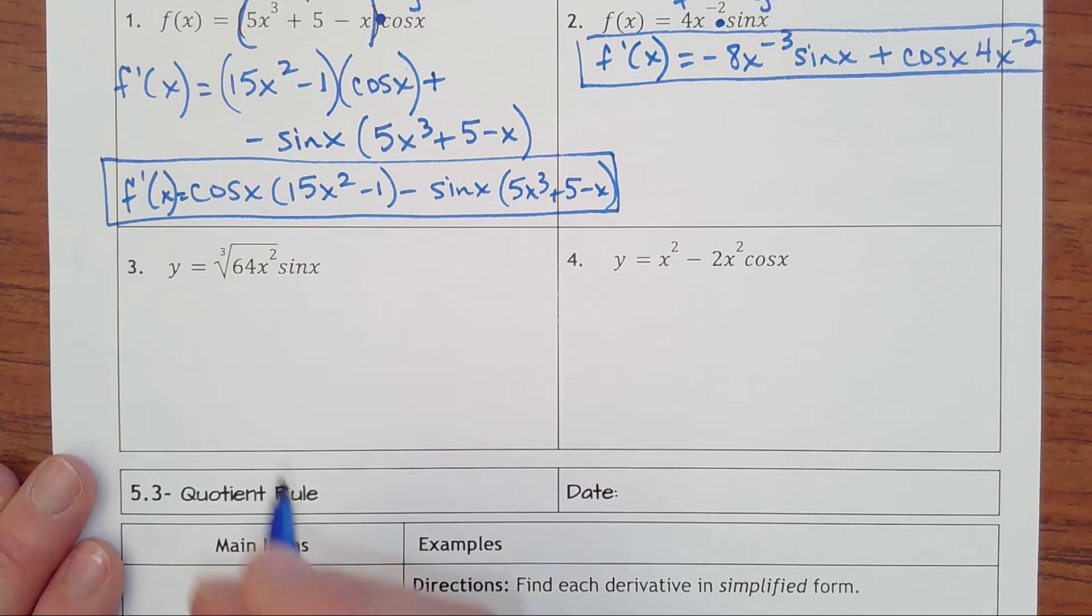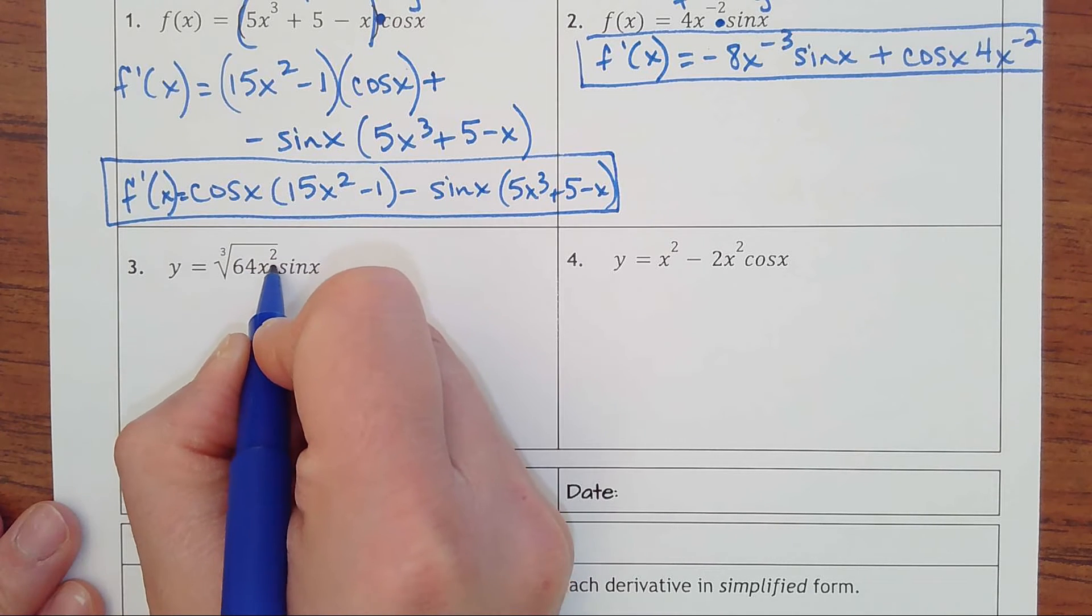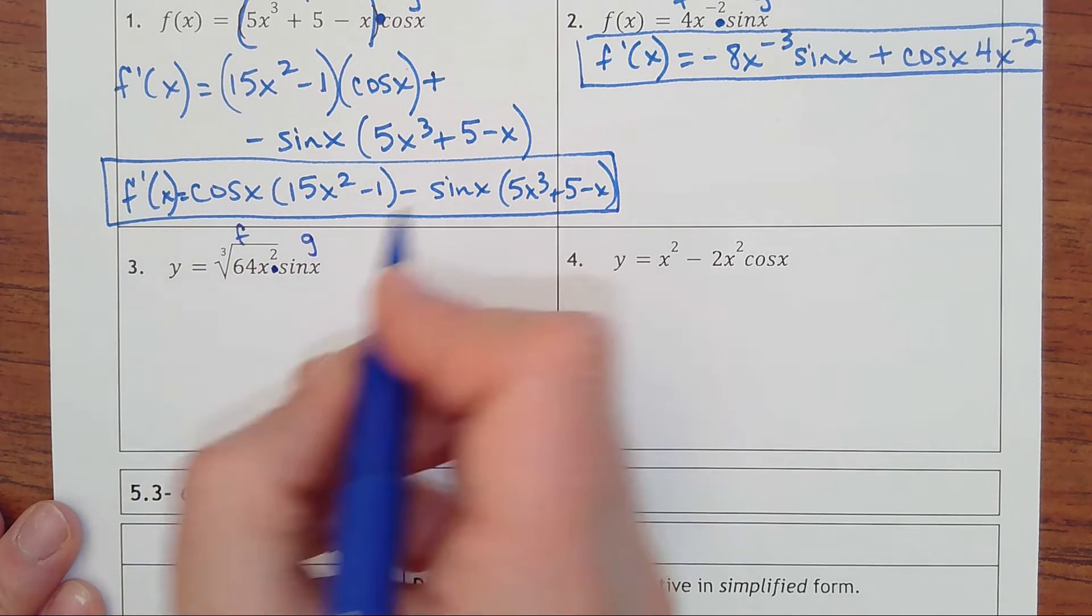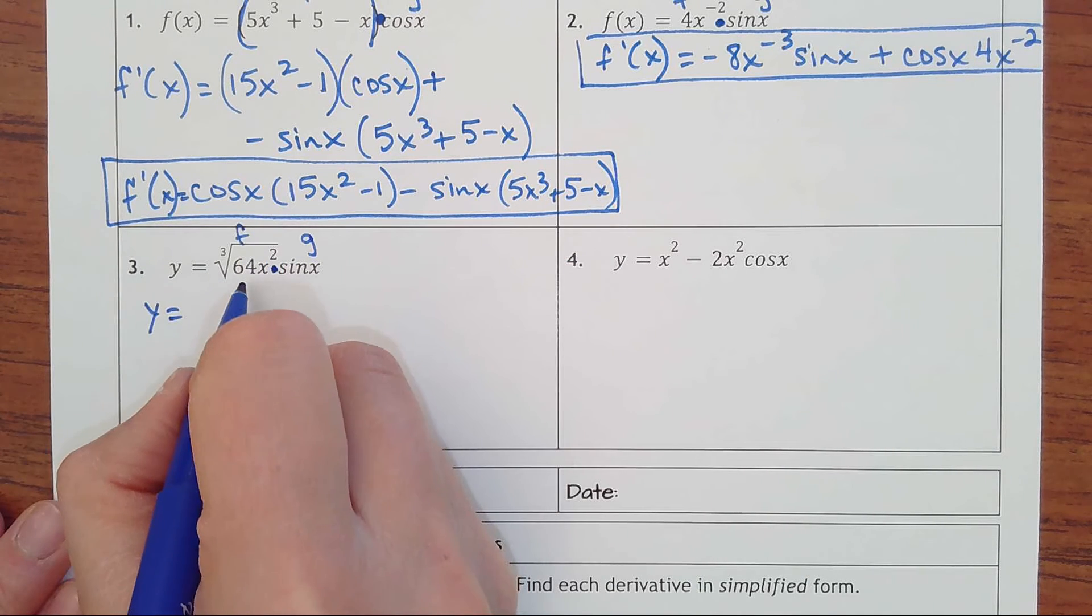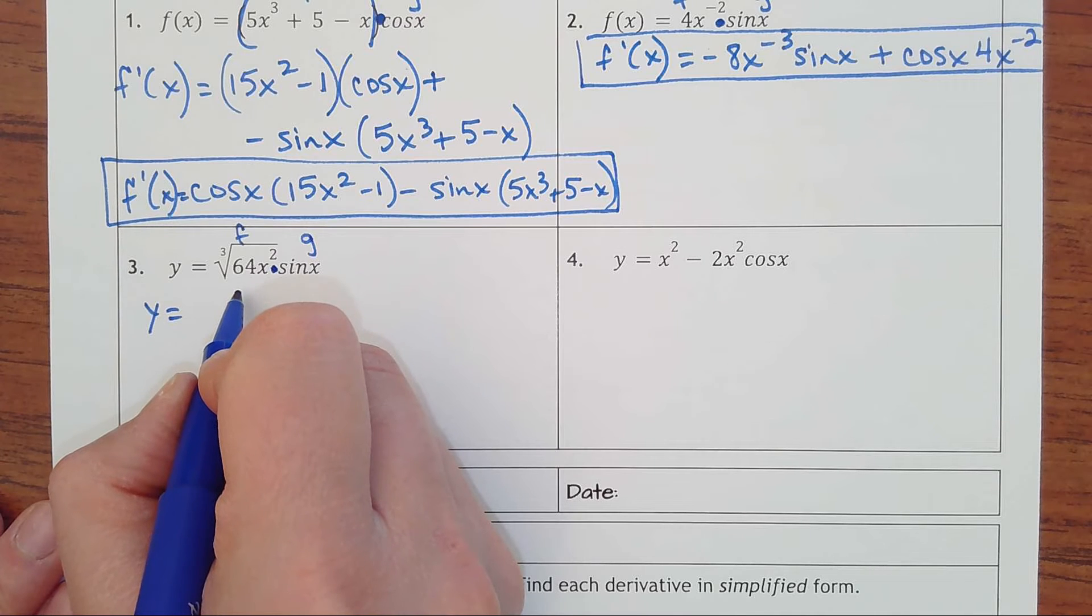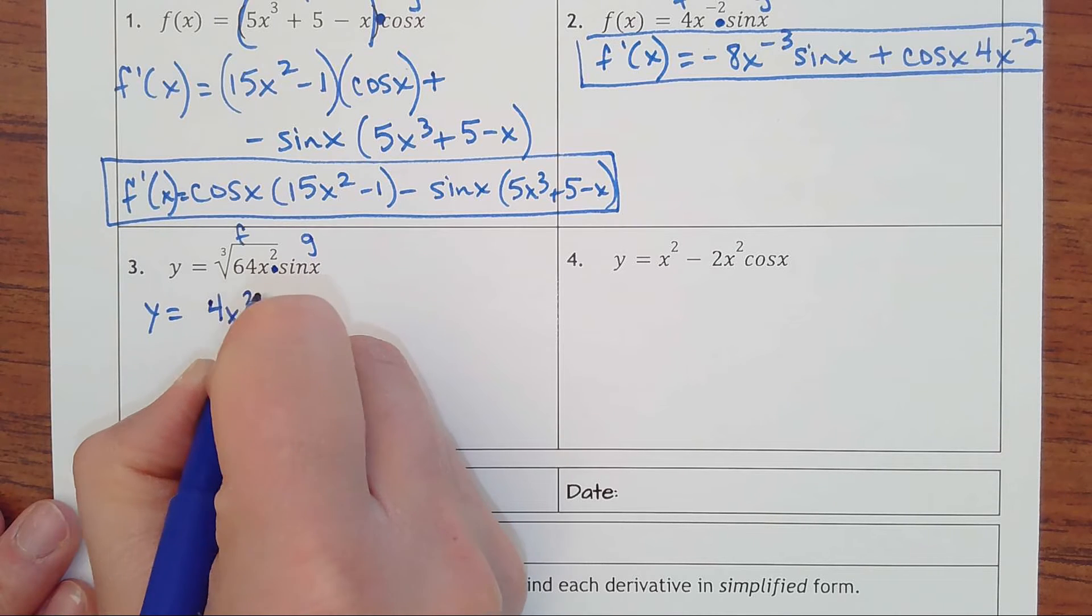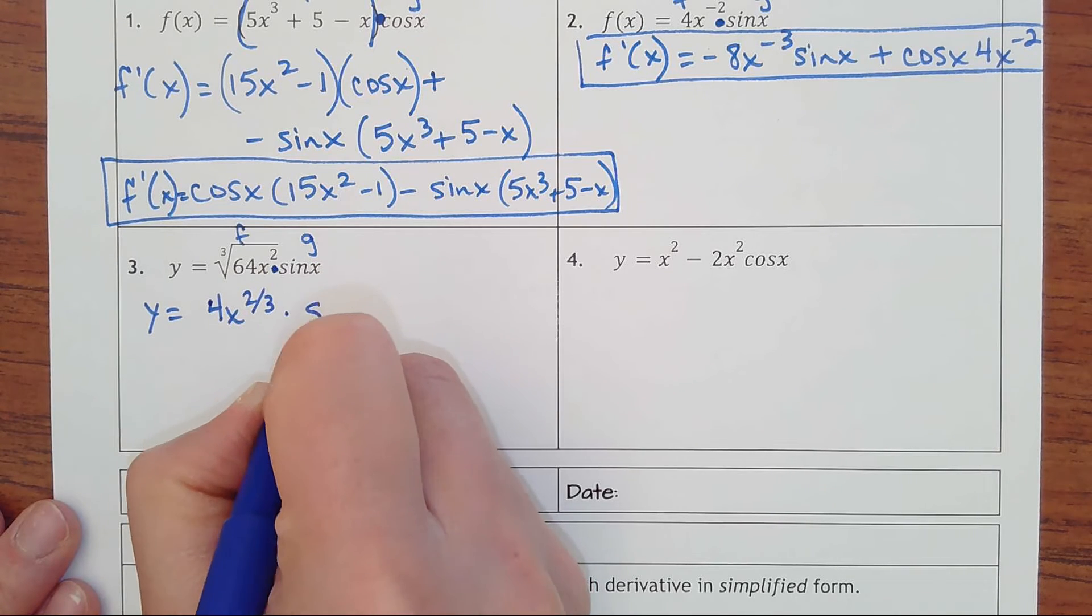Number three. So we have this radical times sine of x. This is my f, this is my g. I would probably rewrite it so that this is cube root of 64, that is x cubed. That's 4x to the two-thirds power times sine of x.